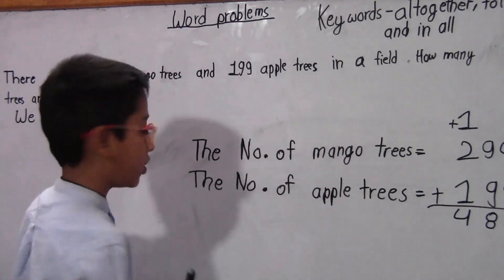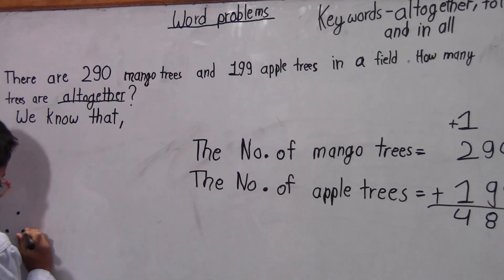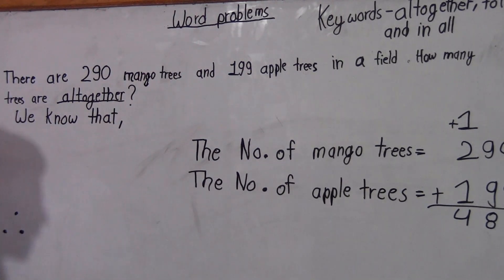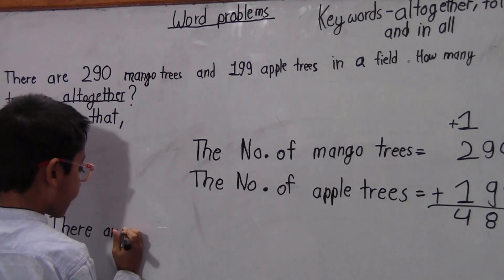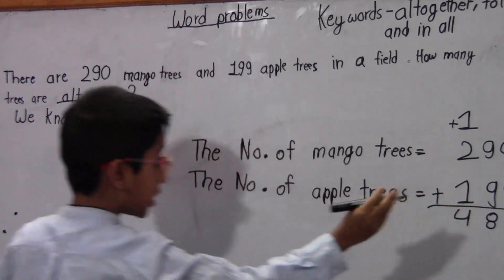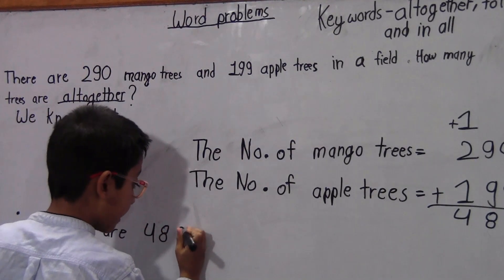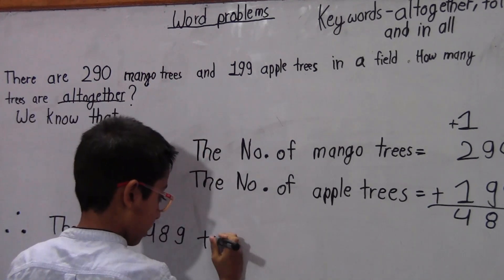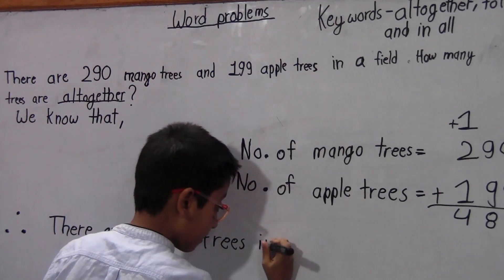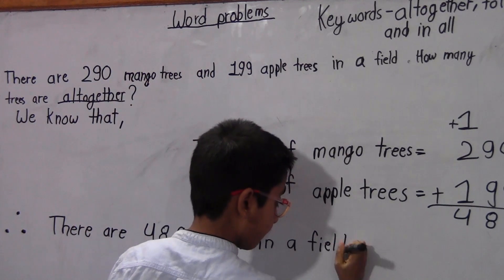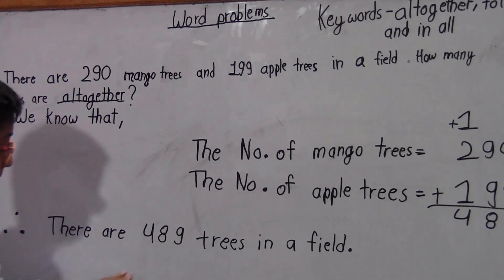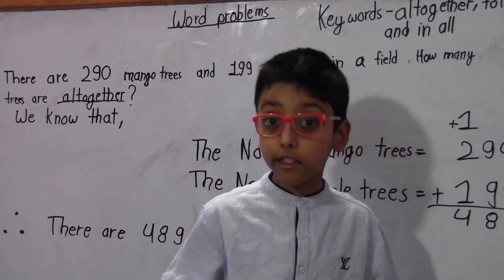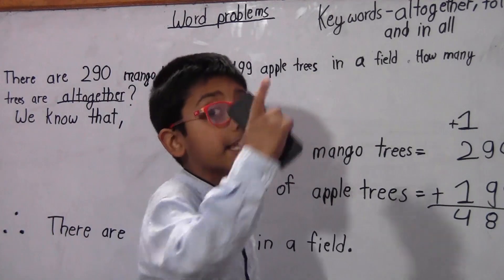Now let's write down the final language. The symbol 'therefore' means we are giving the answer. Therefore, there are 489 trees in a field. That's the answer: therefore, there are 489 trees in a field. Wow, that's a lot of trees in a field! Now let's do the next problem.